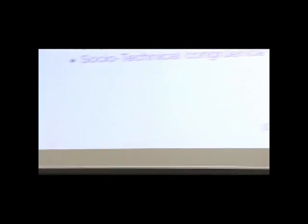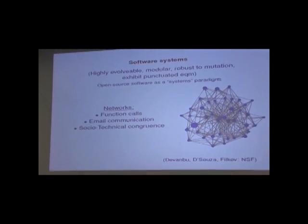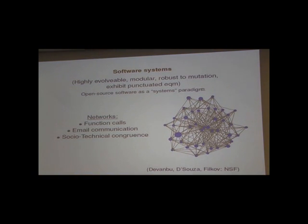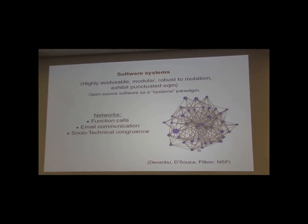And the final network that I've been dealing with a lot is software systems. So we've been looking at the evolution of open source software, and there are so many layers of interacting networks there. One of the main things — and this is a picture here — is looking at what functions call what other functions. Each node is an actual piece of code, a function, and the edges mean that one function invokes another function. So we have this network of function calls.